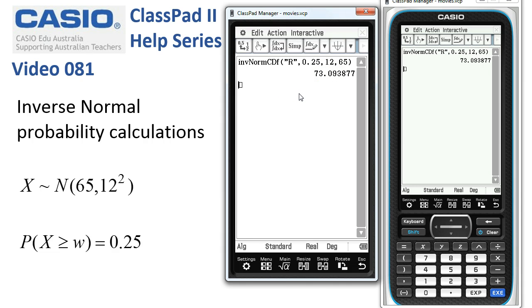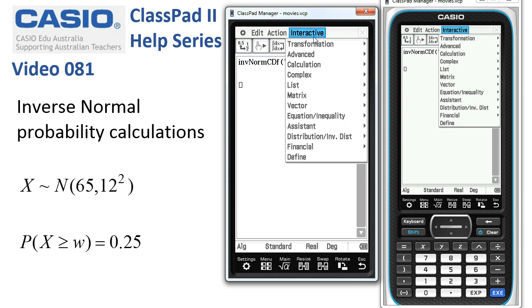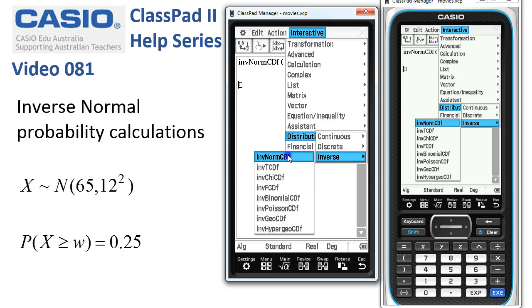The question was: what is w so that 90% of the weights lie within w kilos of the mean. So this would be a center tail. Distribution inverse, inverse normal.